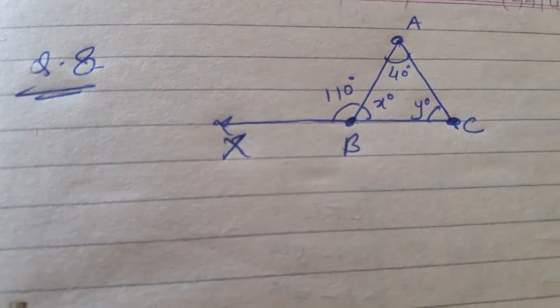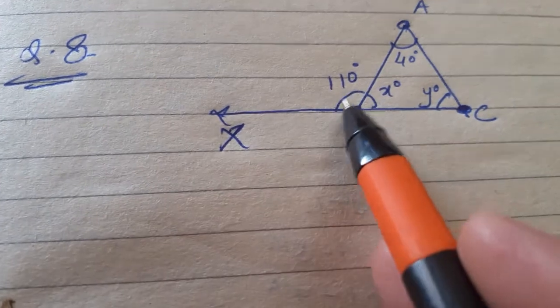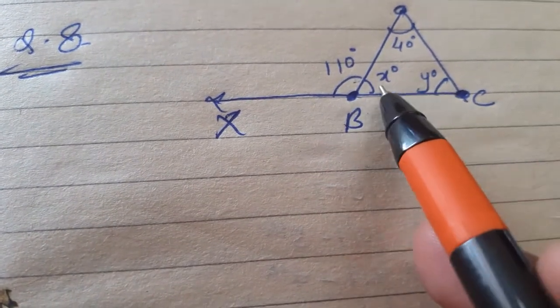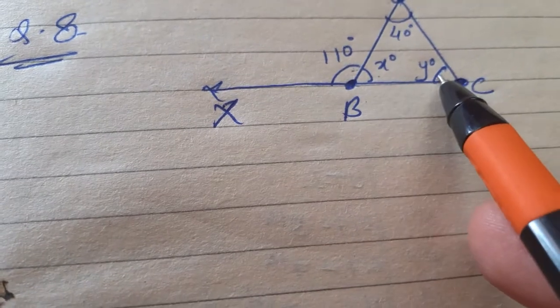Kids, I am telling you this question in which the exterior angle of the triangle is given. It is 110 degrees. We have to find out the value of angle x and angle y.